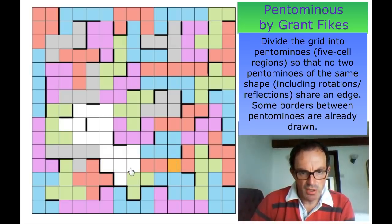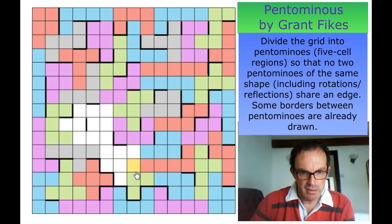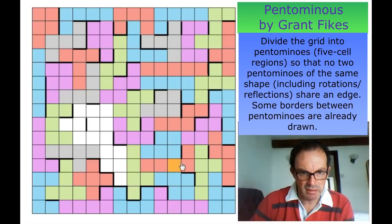So this can't be an F like this; it can't be an F like that because that would isolate this square; it can't be an X — so the only option is that this is a Y.